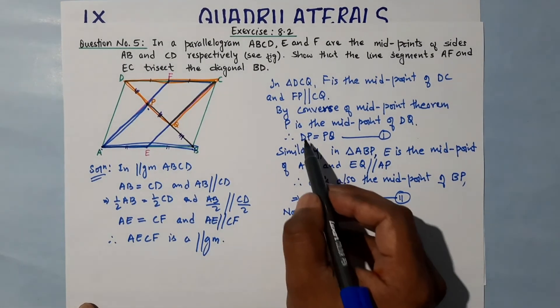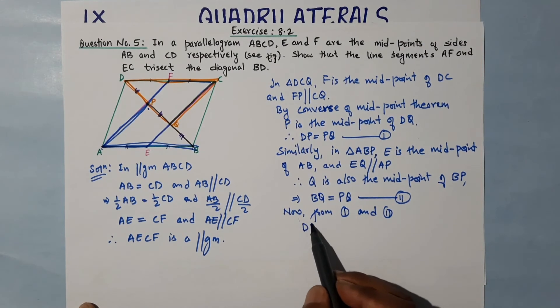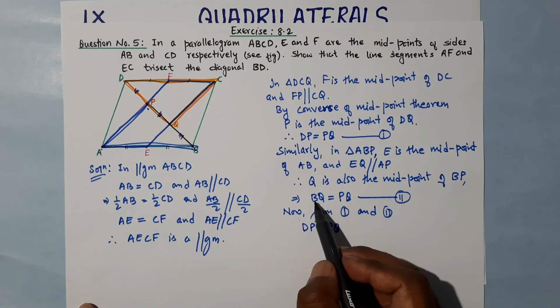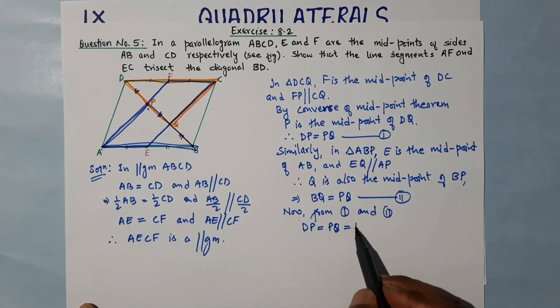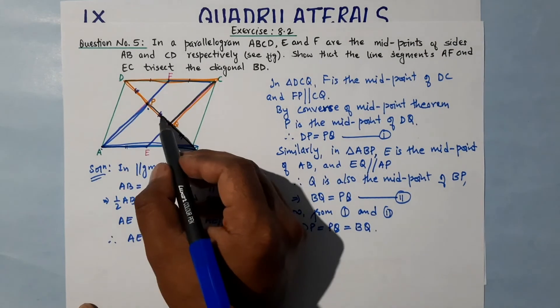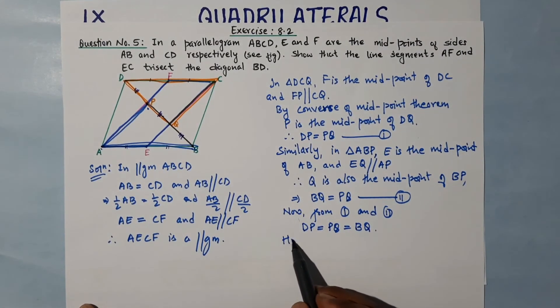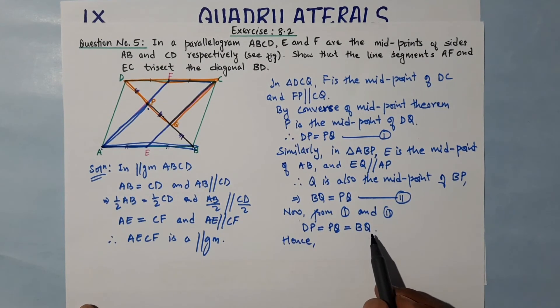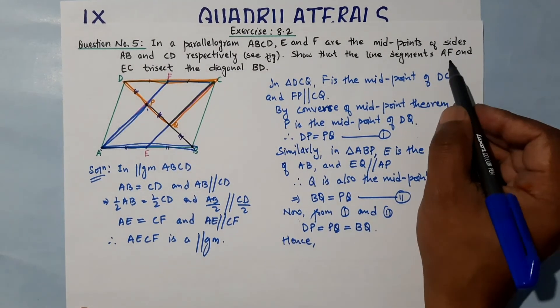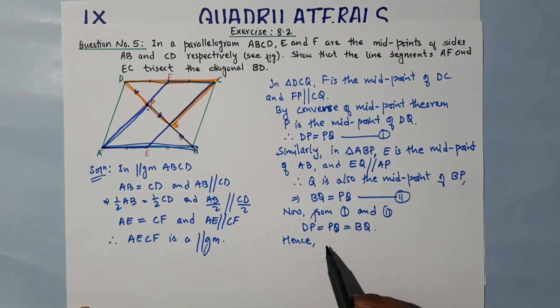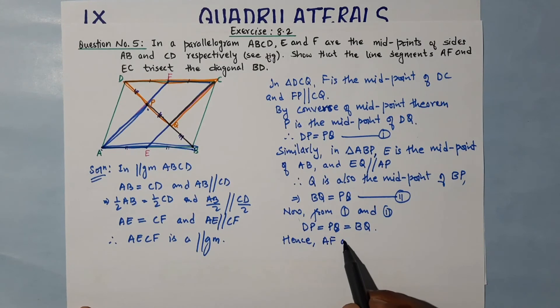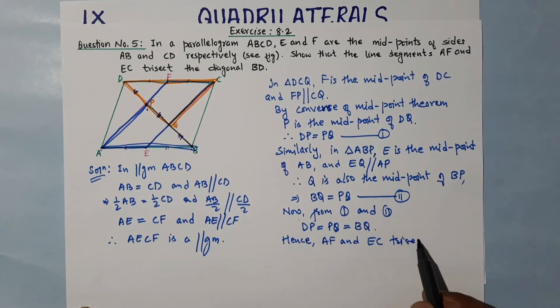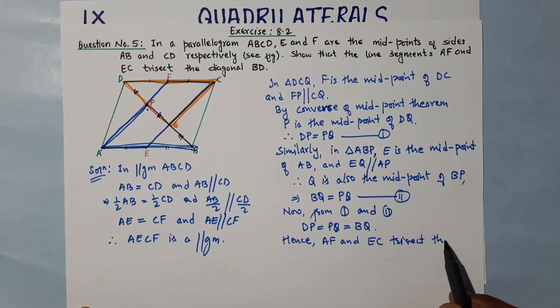Now from equations 1 and 2, we can see DP is equal to PQ, and PQ is equal to BQ. All three parts are equal. Hence we have proved. When it is trisected, it means three parts are equal. Hence...